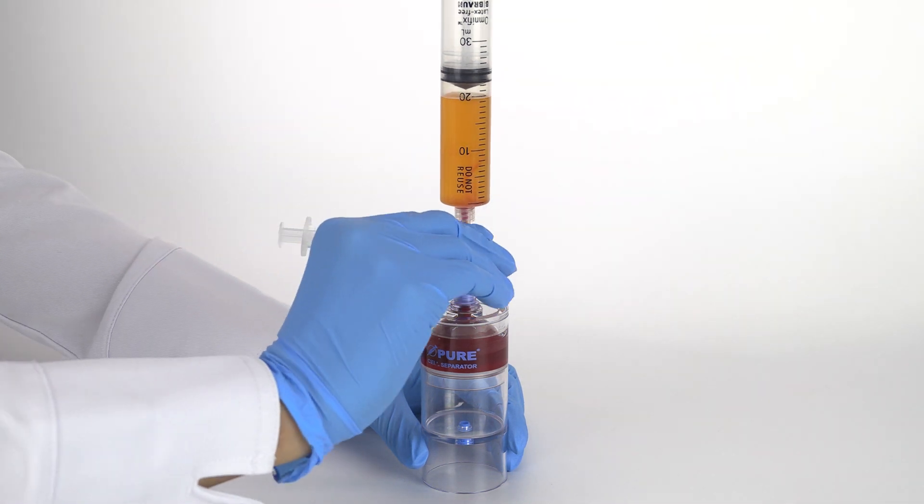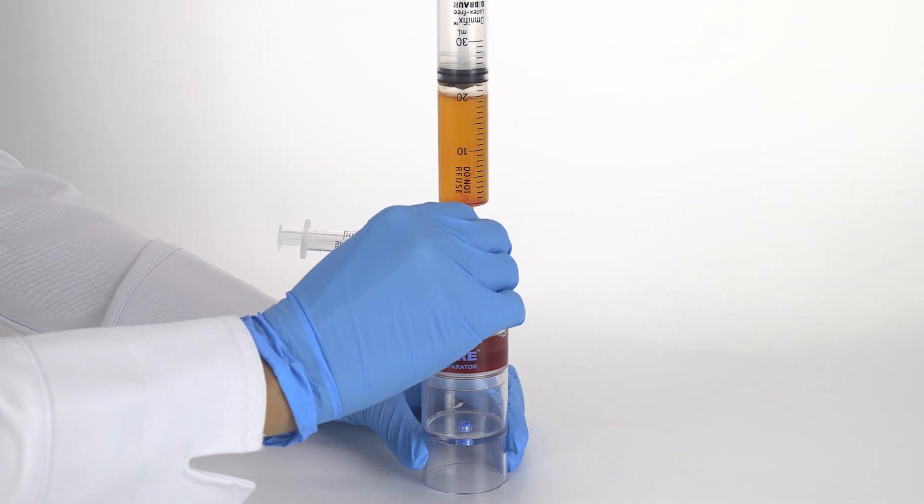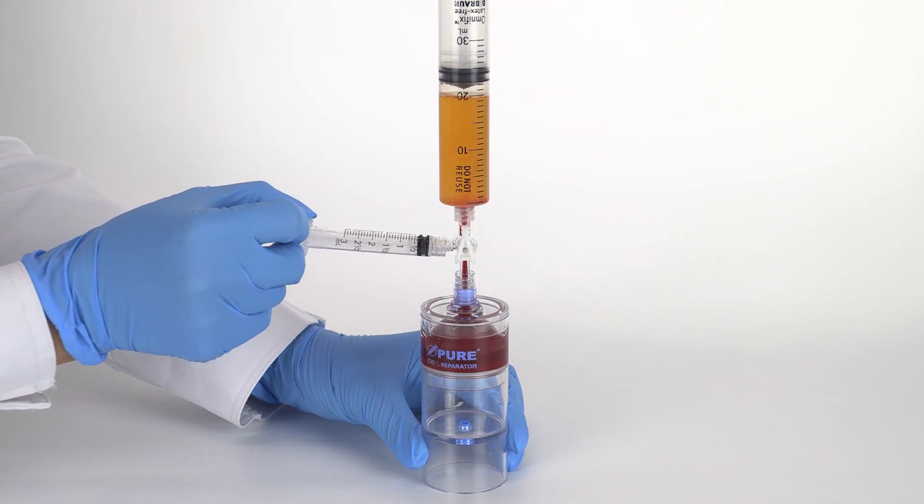Then, open the stopcock to the 3 milliliter syringe and aspirate 1 milliliter of bone marrow red blood cells.